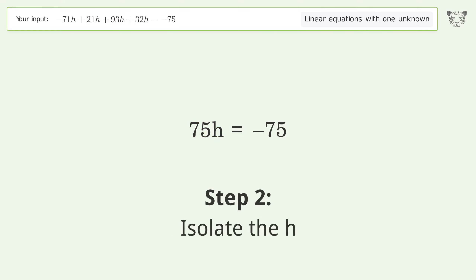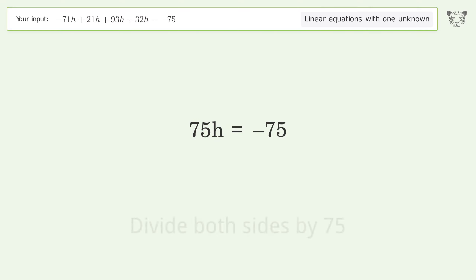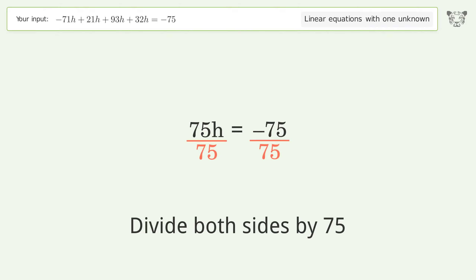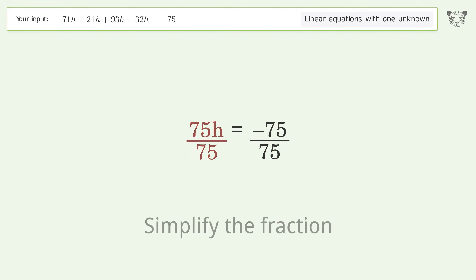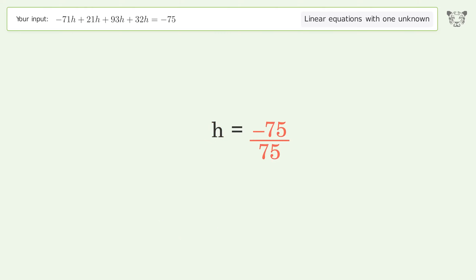Isolate h by dividing both sides by 75. Simplify the fraction. And so the final result is h equals negative one.